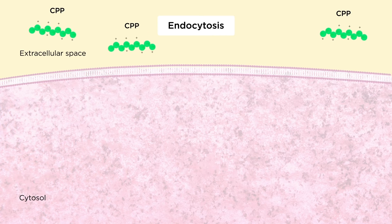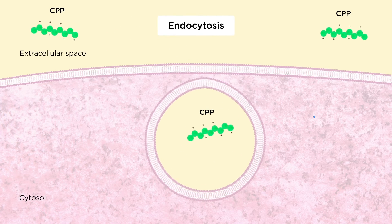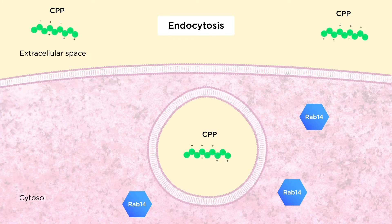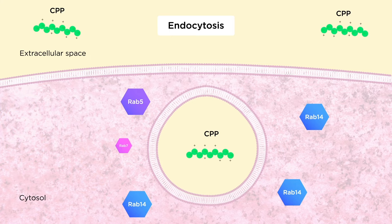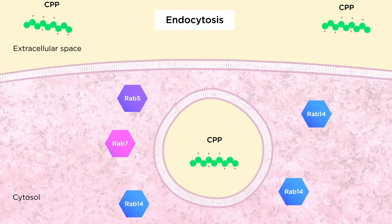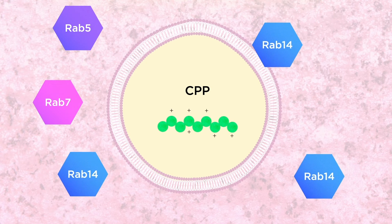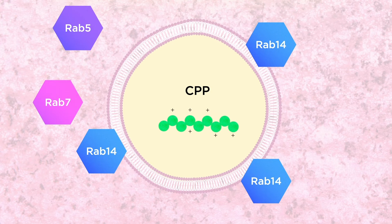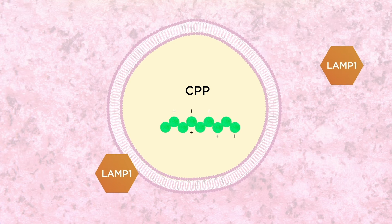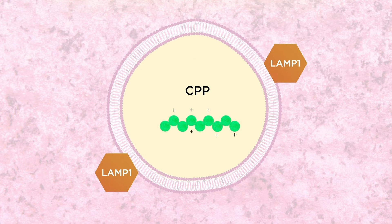CPPs can also be endocytosed via a newly discovered pathway that requires RAB14, unlike classical endocytosis that is regulated by RAB5 and RAB7. After the CPP-containing endosomes are formed, the RAB14 proteins bind to them and this allows the recruitment of the EEA1 tethering protein. This allows maturation of the CPP-containing endosomes to LAMP1 positive vesicles that are non-acidic and probably non-degradative.